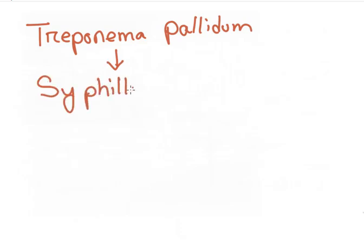We have Treponema pallidum which produces syphilis. It transmits either through sexual contact or across the placenta.